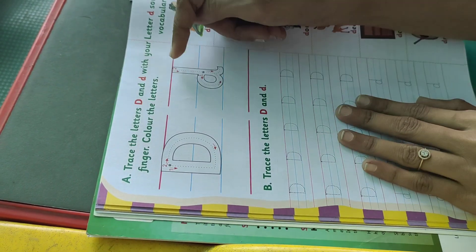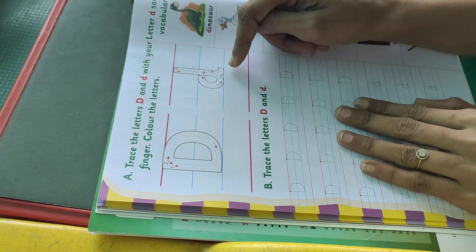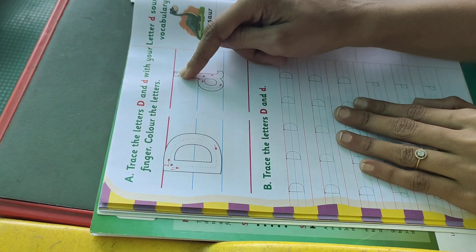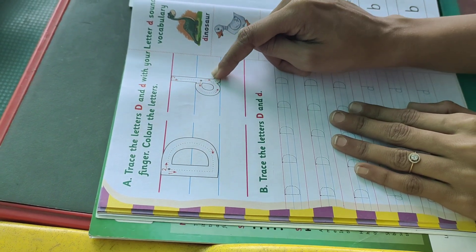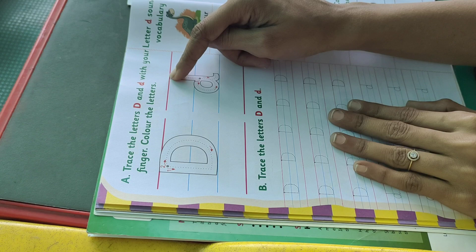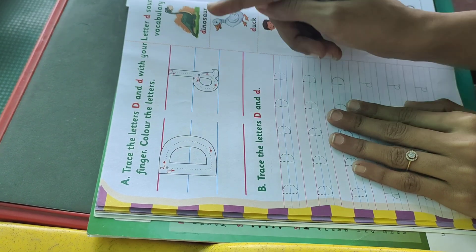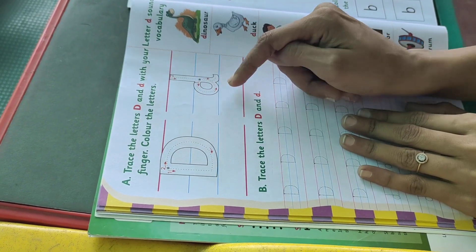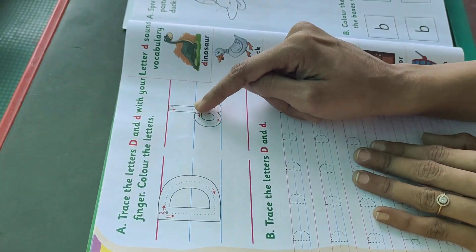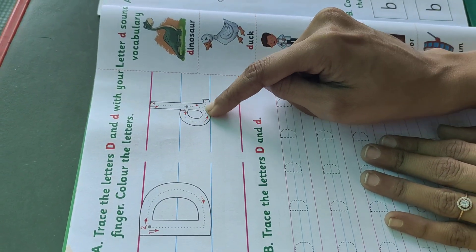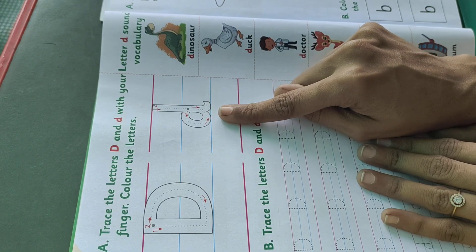For small d, we will make red line to second blue line. Standing line with right hook. From the first blue line to second blue line, you have to make right curve. This is small d.